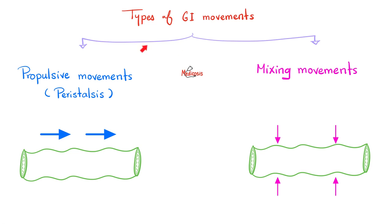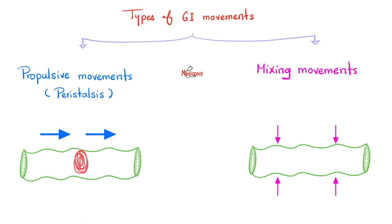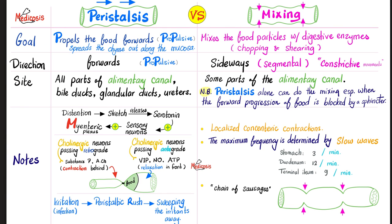Types of movements in your gut: propulsive movements, also known as peristalsis. What does peri mean? Around — because we're moving around food. Imagine the food bolus is here — contraction behind it, relaxation in front of it. That's peristalsis. We also have mixing movements to chop the food and mix it with your enzymes.